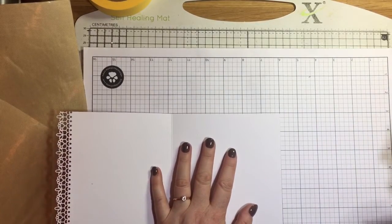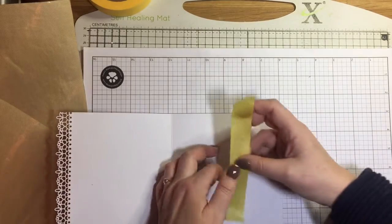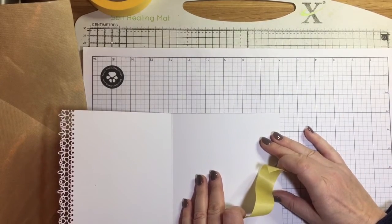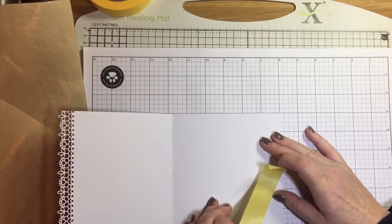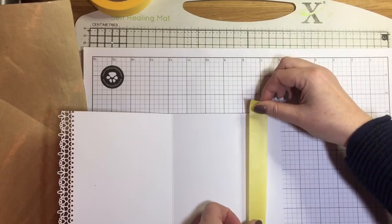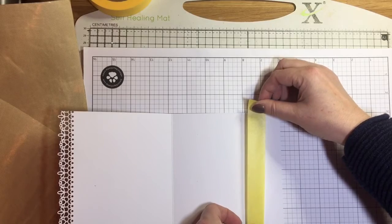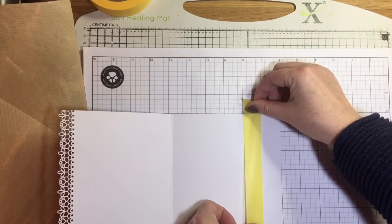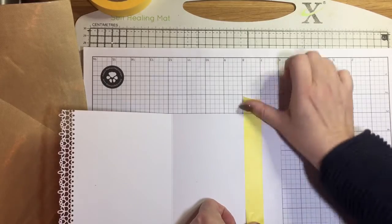I'm using my grid paper to make sure I get this straight because it'll really show if it's wonky. I'm just carefully lining that up and now I'm ready to add my paint.